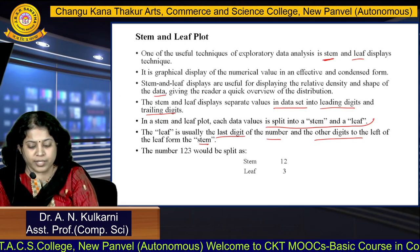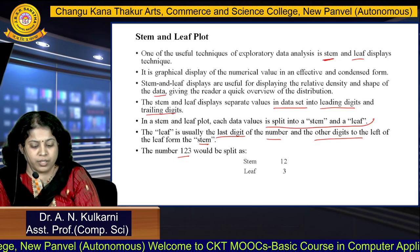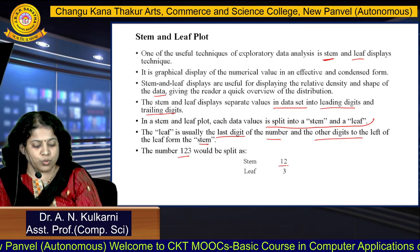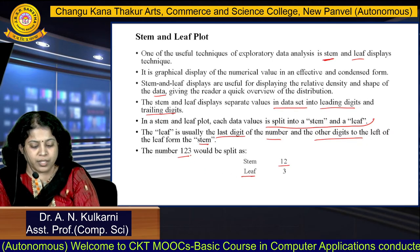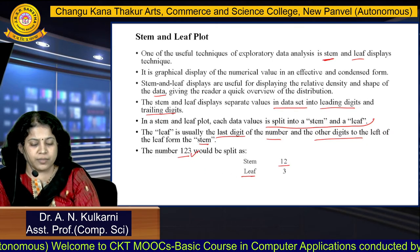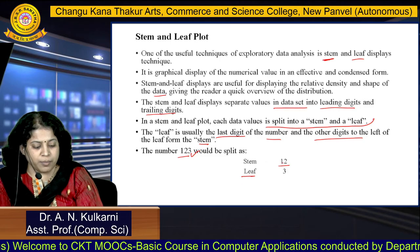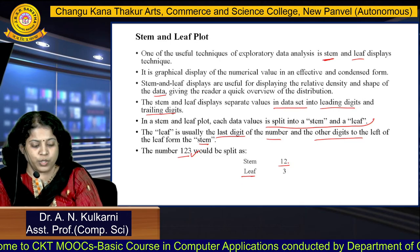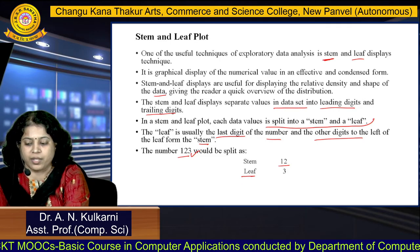In a stem and leaf plot, each data value is split into a stem and a leaf. The leaf is usually the last digit of the number, and the other digits to the left form the stem. For example, for the number 123: the leaf is 3 and the stem is 12.